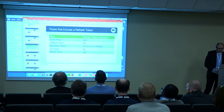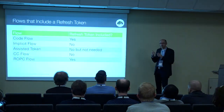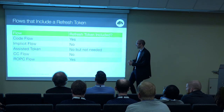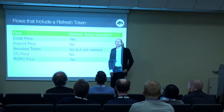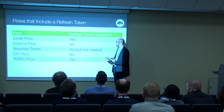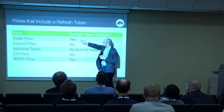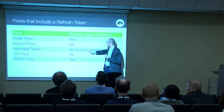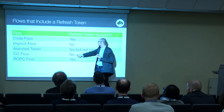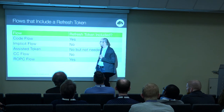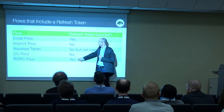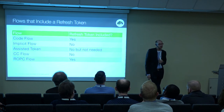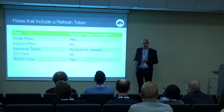Here's an important table as we look at all these flows. We talked about code flow, implicit flow, assisted token flow, client credential flow, and resource owner password credential flow. For your information: you get a refresh token in the code flow. Not in the implicit flow. In the assisted flow you don't even need it. In the client credential flow you don't get it — you have the credential from the client to get a new one, so there's no point. And in ROPC, you can get a refresh token.